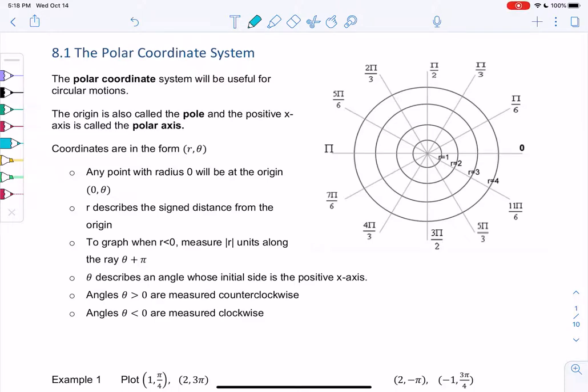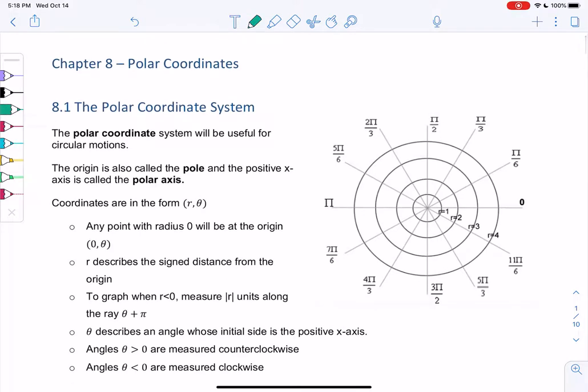Section 8.1, the polar coordinate system. We're going to look at a whole new world of graphing. The old world was x and y, that's rectangular. Now we're in this new, more circular world. The polar coordinate system is useful for circular motions.